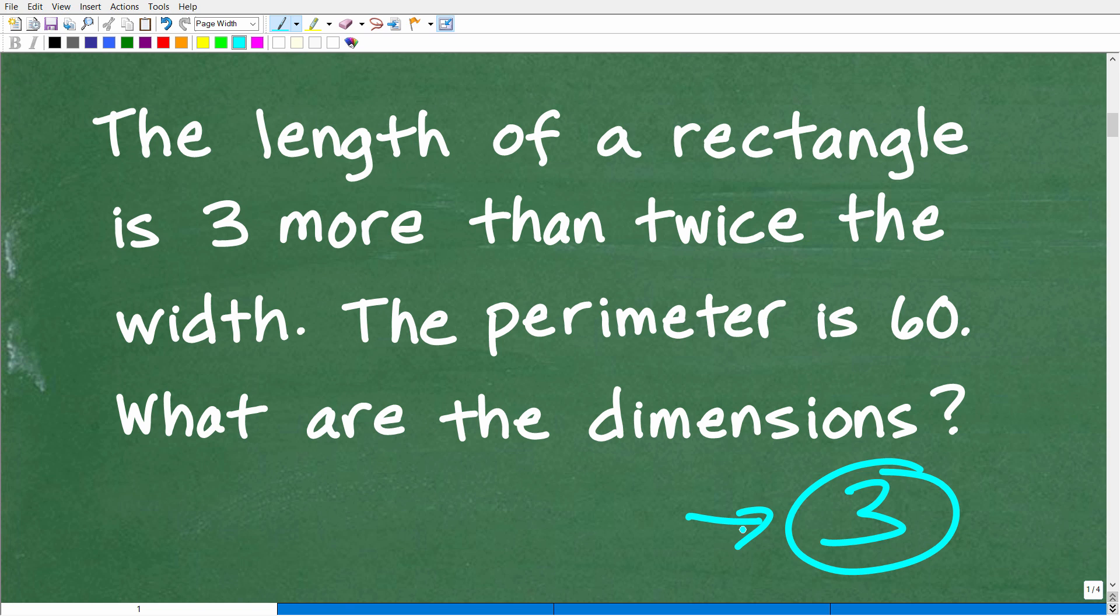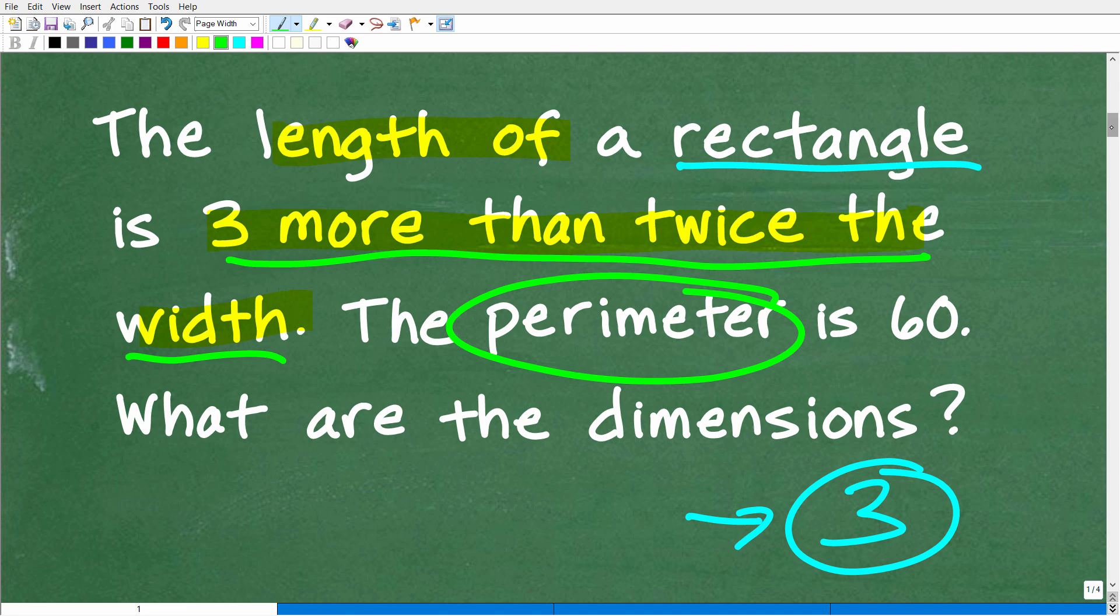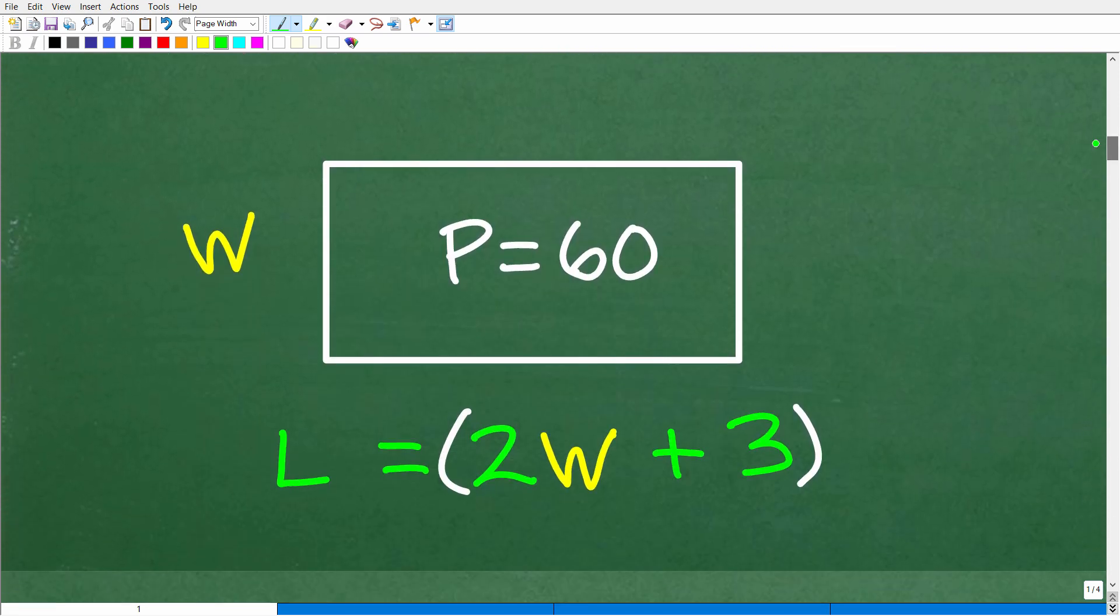But after you read the problem, like at least three times, then what you want to do is try to model the situation or visualize it. And of course, this is where math becomes very creative. But here we are dealing with a rectangle. So it's probably a good idea just to sketch out a rectangle and then interpret all these different parts of the problem, maybe visually. So the length of this rectangle is three more than twice the width. This part right here could be a little bit confusing. So certainly, you want to read the problem more than one time to make sure you've interpreted the problem correctly. And then, of course, we're going to need to understand what the perimeter of a rectangle means as well.